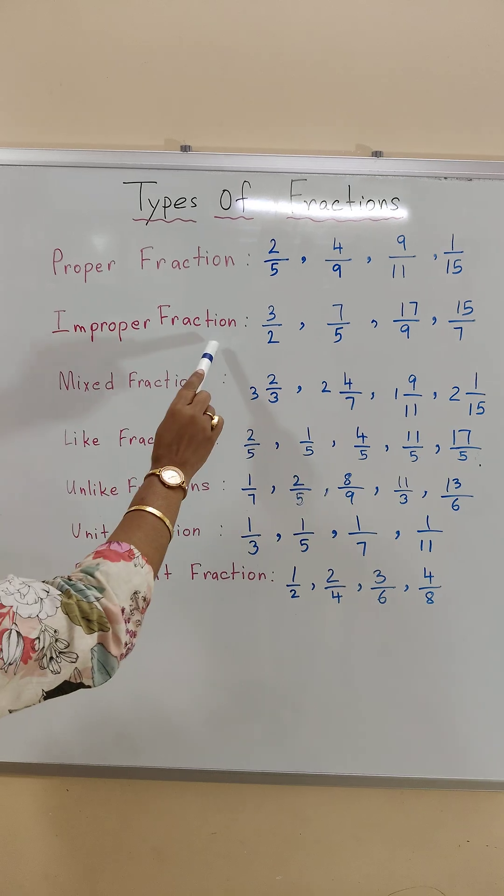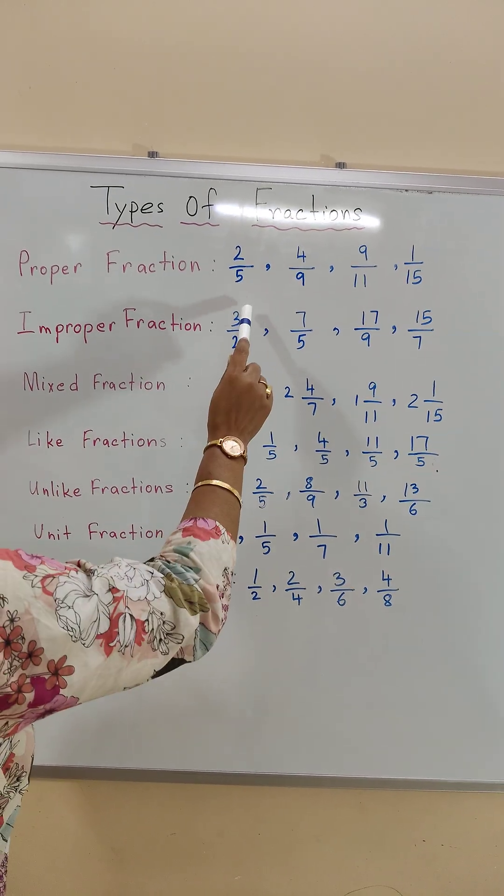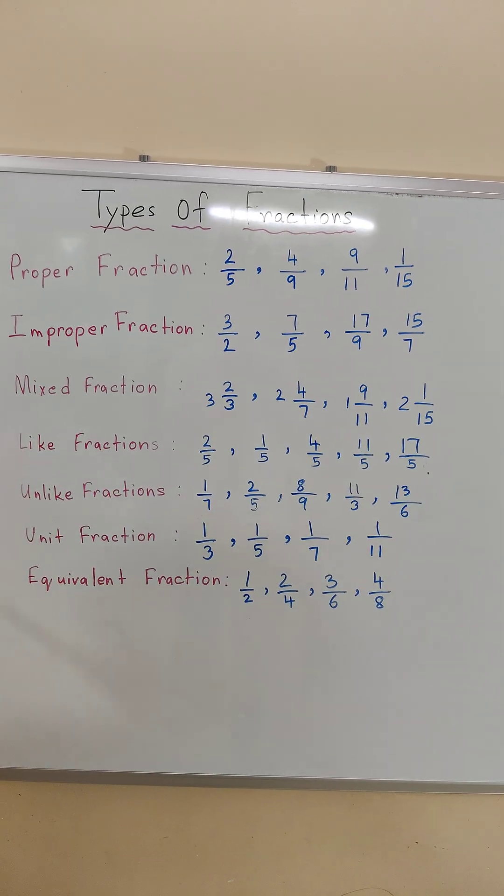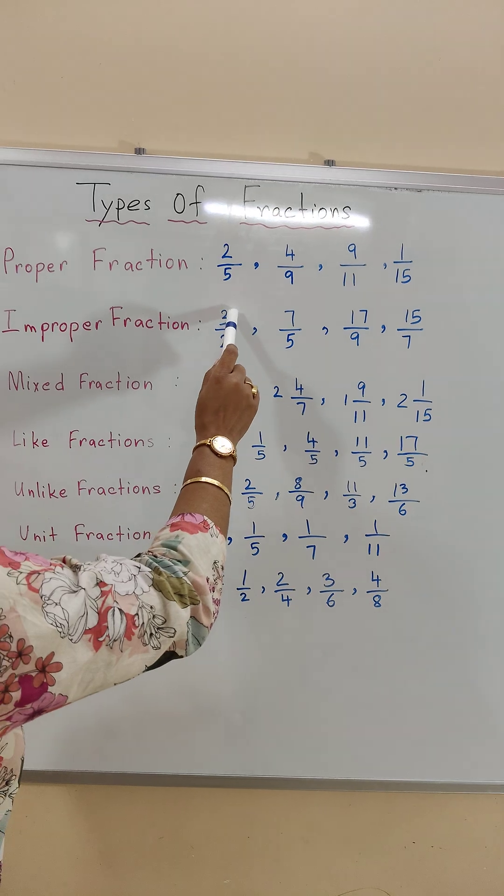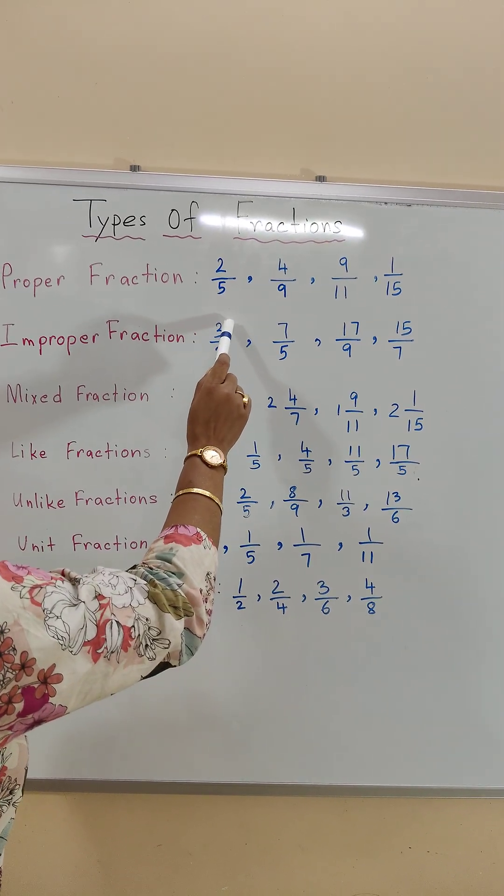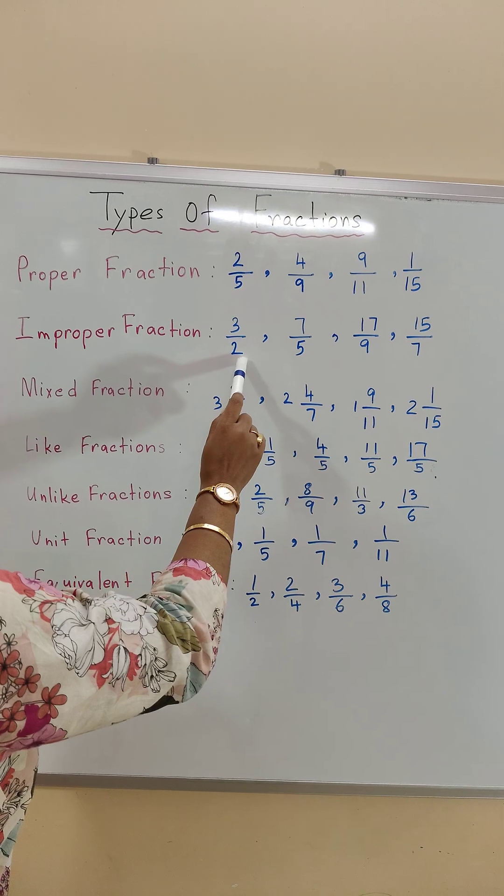Number two, improper fractions where the denominators are smaller than the numerators. See, 3 by 2, where the numerator is bigger than the denominator.